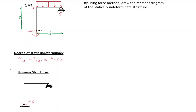I'm going to remove the moment at this support and call it X1, so X1 is my redundant force. Since this reaction has a moment, I take it as the redundant force. This support now changes from a fixed support to a simple support with just a horizontal force and a vertical force. Let's check: this becomes an isostatic system with three reactions minus three equations equal to zero — which is what we want, a statically determinate structure.